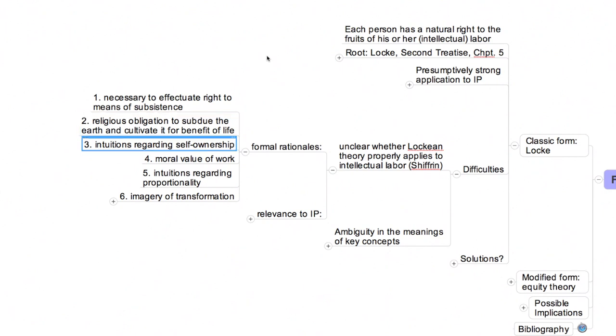Next, Locke argued that our intuitions tell us that a person has a, quote, property in his own person, including, as we saw in the passage I read earlier, quote, the labor of his body and the work of his hands, end quote. When we mix the work of our hands, which we owned, with unowned raw material, it seems natural, he argued, that the former should color the latter.